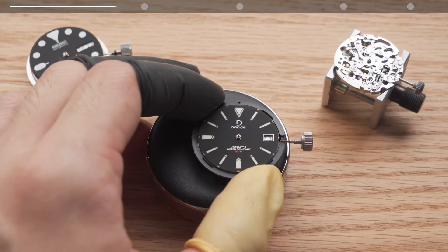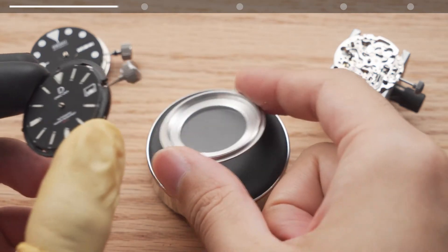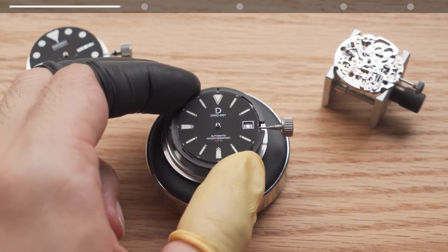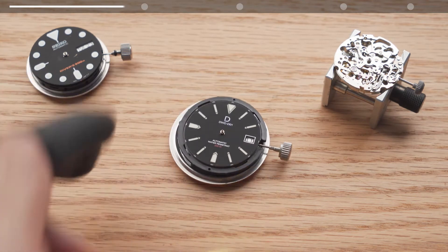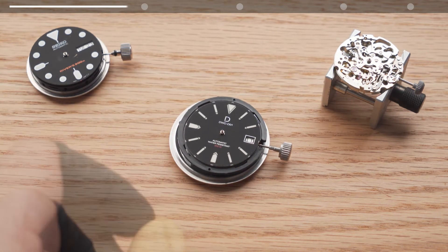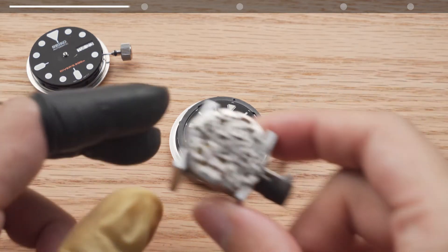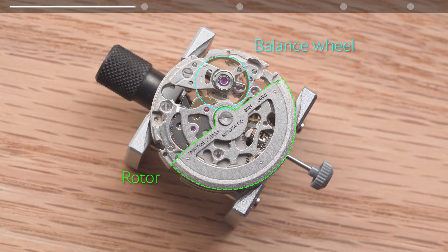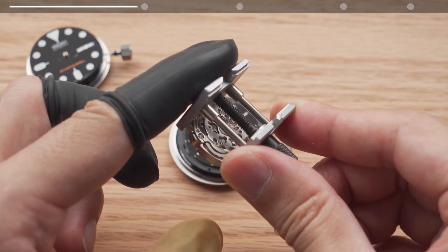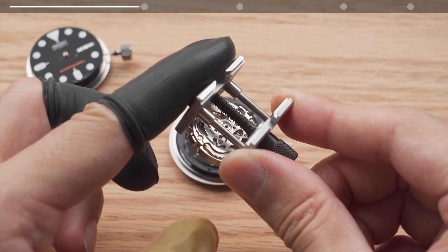For most watches you can use the case back of a watch itself to support the setup like this. In this case the pad is optional, just choose a flat surface that won't scratch your case back. You may choose to use one of these movement holders but be careful when you tighten it not to damage any of the moving components. For some movements such as the Miyota 8 series you may have to remove the rotor for a good grip.